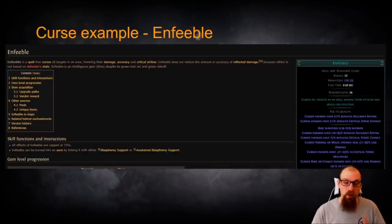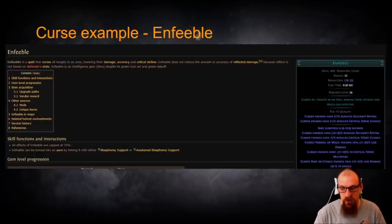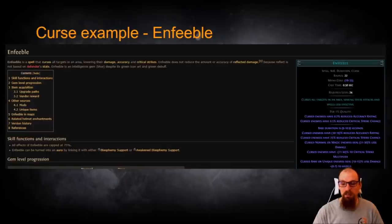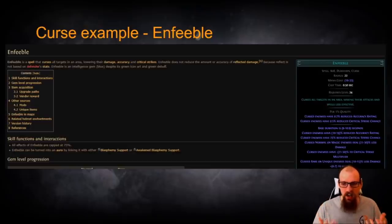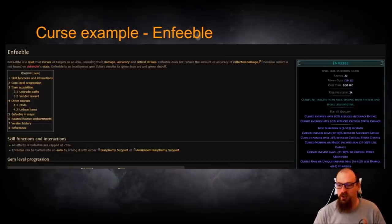Lastly we'll take a look at Enfeeble which is a fantastic defensive curse that is available. This is what Enfeeble does. Per 1% quality Cursed Enemies have 0.2% reduced accuracy rating and Cursed Enemies have 0.5% reduced critical strike chance. That's just on its own based off of the quality of the gem. Those are stats that are great in and of themselves. Reduced accuracy and reduced critical strike chance. But on top of that there are some very juicy flat bonuses that will again get increased via our various increased effective curses including Cursed Enemies have 10-19% reduced accuracy rating.